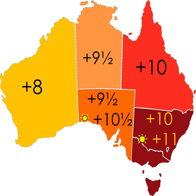Queensland has had a particularly involved debate over daylight saving time, with public opinion geographically divided. A referendum on DST in 1992, following a three-year trial from 1989–90 to 1991–92, was defeated with a 54.5% negative vote. The referendum result displayed a distinct trend: the negative vote was strongest in northern and western districts, while the positive vote was strongest in the southeastern region, e.g. in Brisbane.